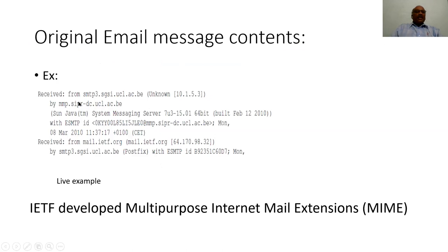The original email messages contain a lot of information: where the email originated, which particular server it came from, the domain name, when it was sent, to whom it is to be received, and the receiving email server addresses. As technology evolved, people began using encoding techniques beyond simple ASCII to send not only text messages but also multimedia data along with emails. A different procedure was developed where the Internet Engineering Task Force developed Multipurpose Internet Mail Extensions (MIME), which does not disturb the original procedures of sending data.